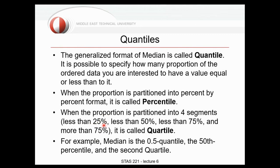With quartiles, we have 25%, 50%, and 75% of data less than a value — dividing data into four segments. We have Q1, Q2, and Q3, which we will discuss in detail when we cover box plots. The median in terms of quantile is 0.5 quantile, in terms of percentile it is the 50th percentile, and in terms of quartile it is Q2. We should remember Q1, Q2, and Q3 as quartiles — they are very important.